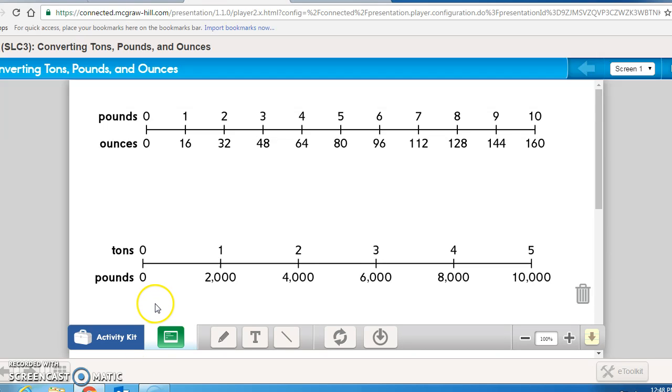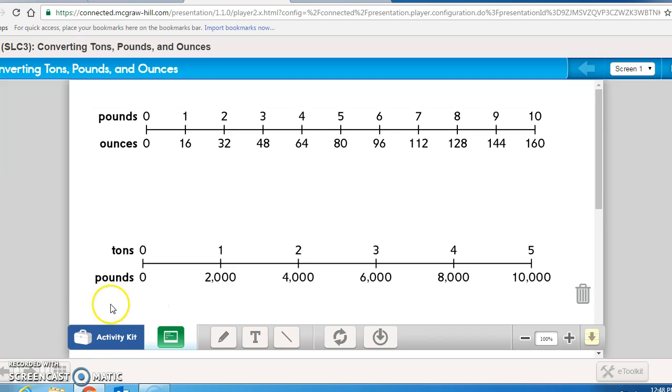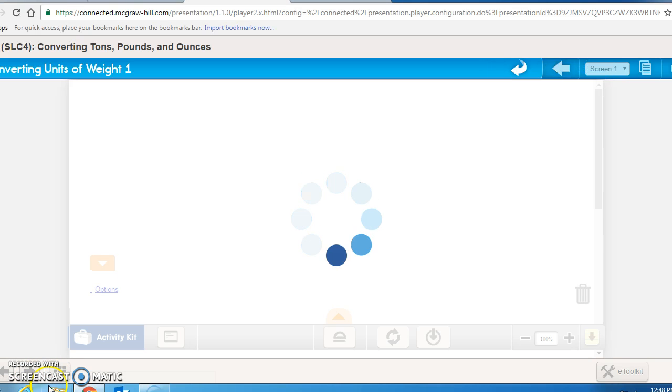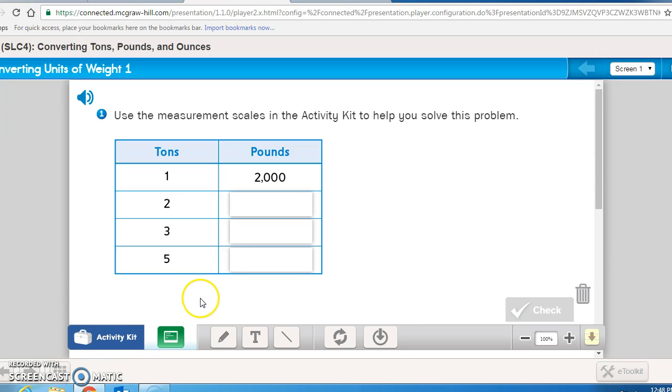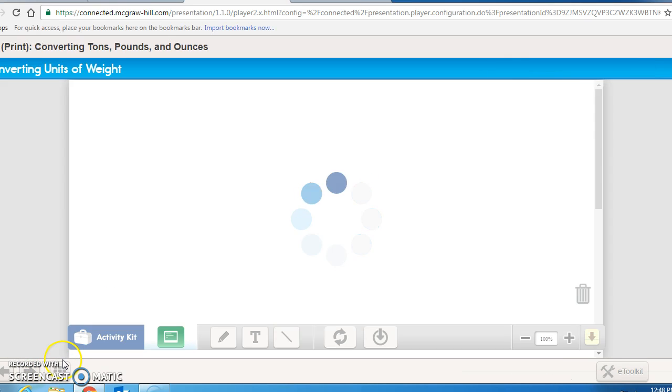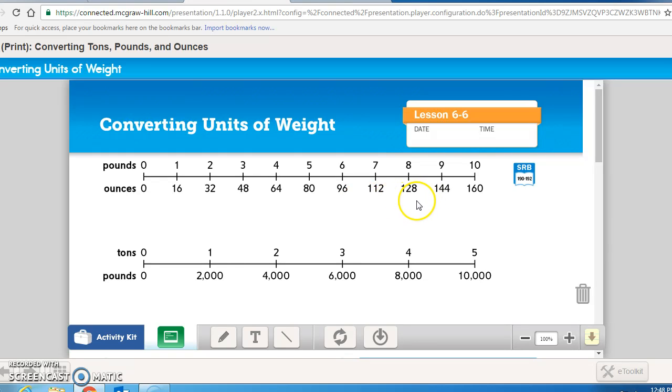Now you're going to turn to Math Journal page 204. Math Journal page 204 is an ACI, an assessment check-in. So please finish this page and then bring it back to me so that I can check to see if your answers are correct. What you're going to be doing is you're going to be using those measurement scales and converting tons into pounds, pounds into ounces on this page. So complete Math Journal page 204, bring it back to me so I can check it, and then you can turn the recording back on to continue. Pause the recording now and do Math Journal page 204.